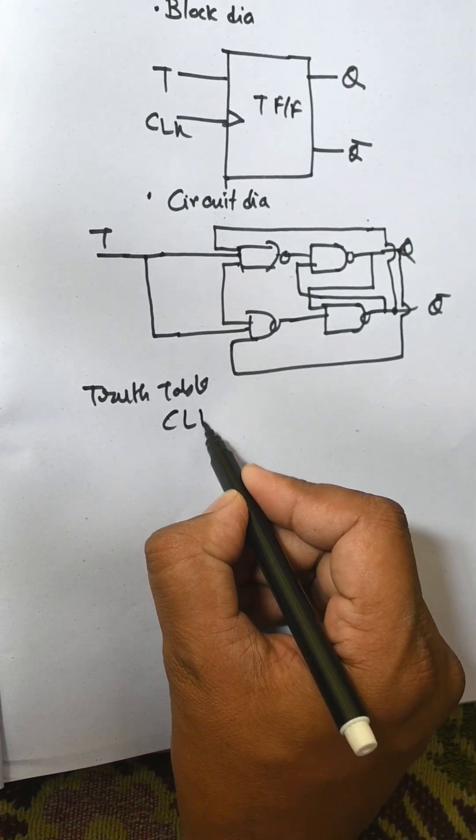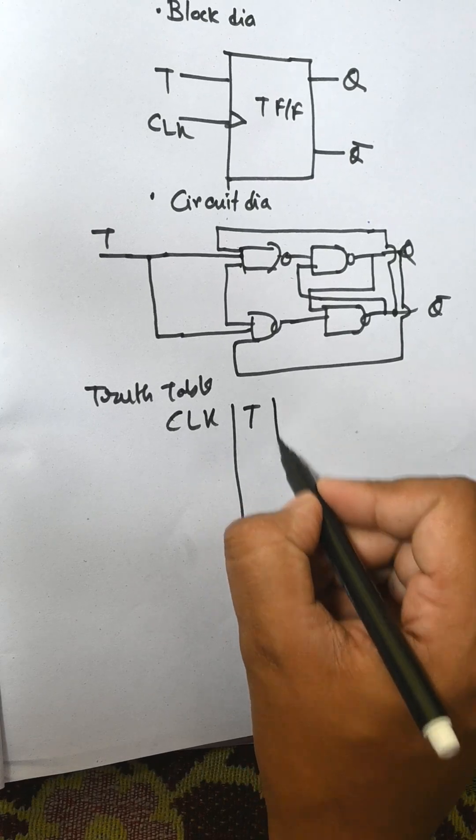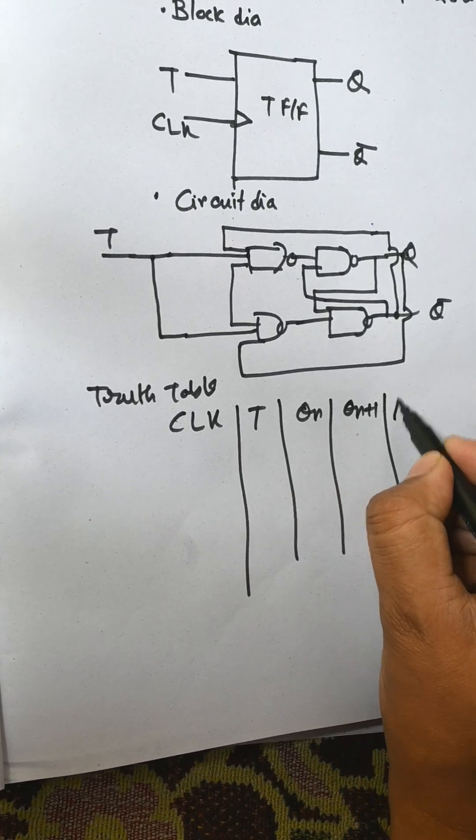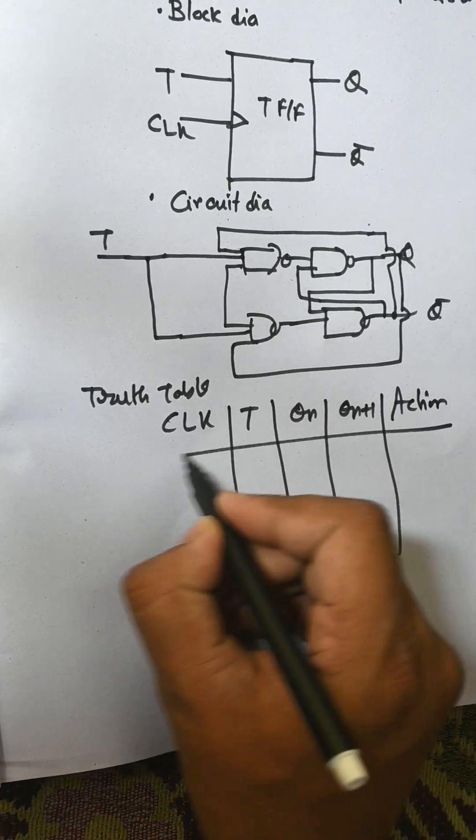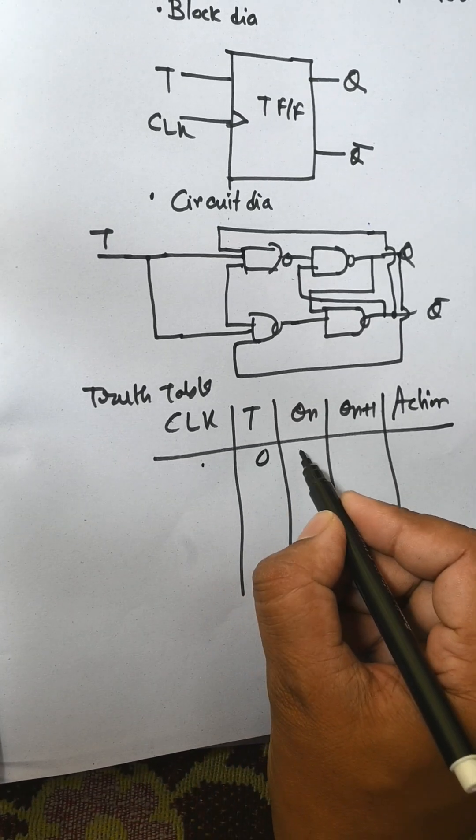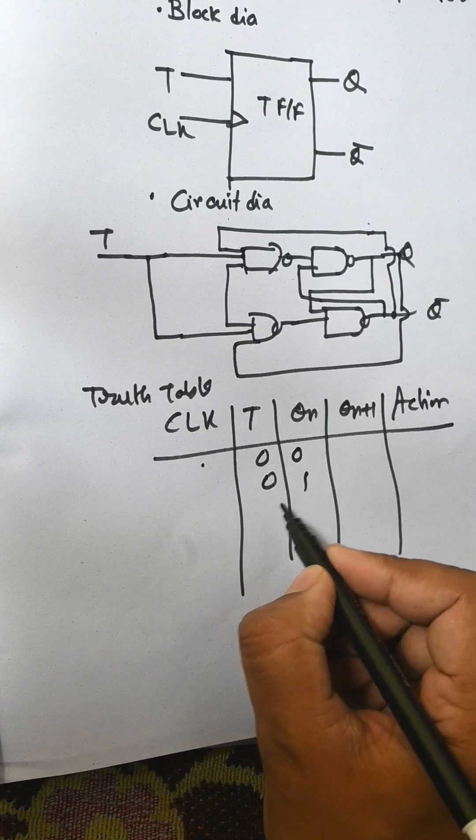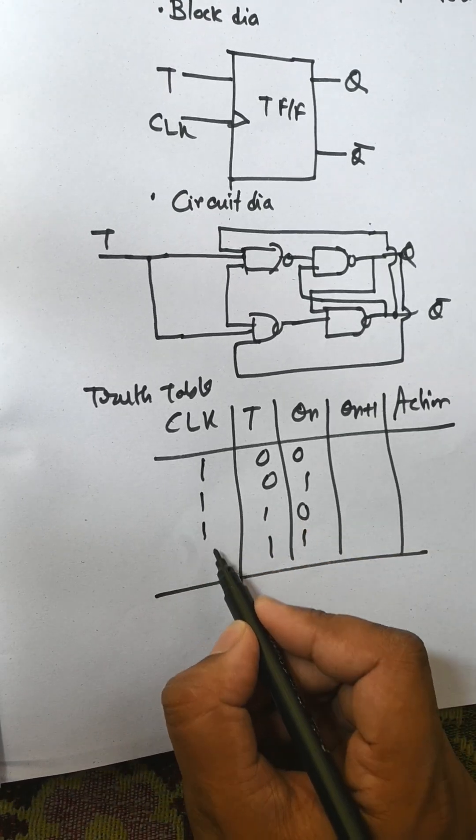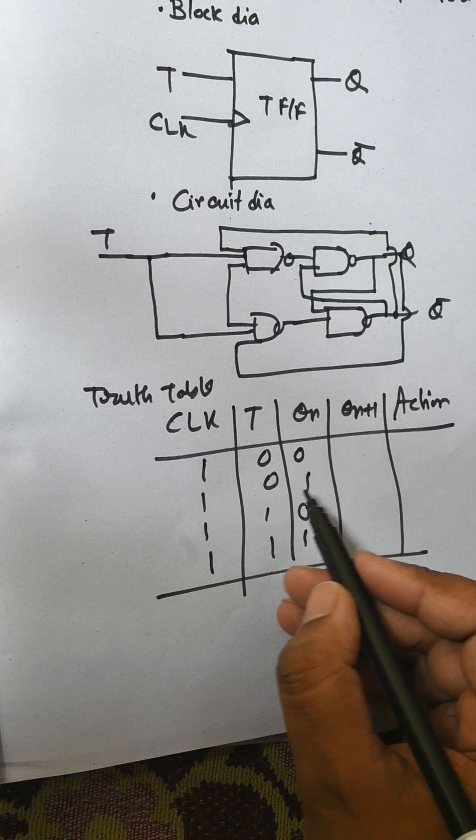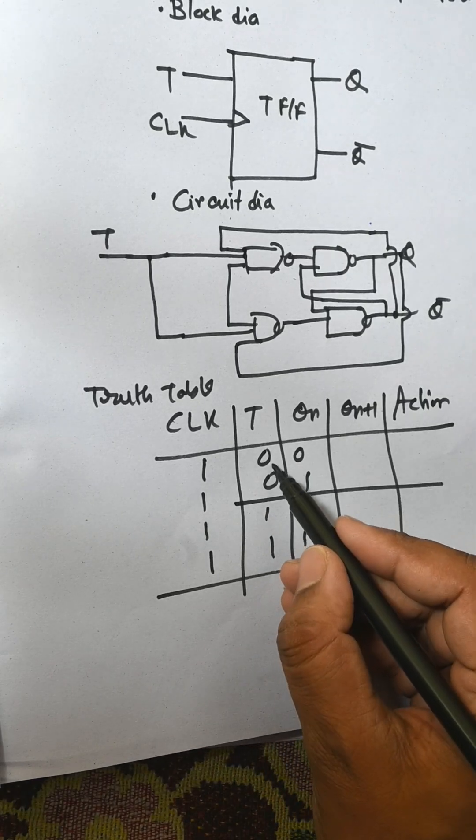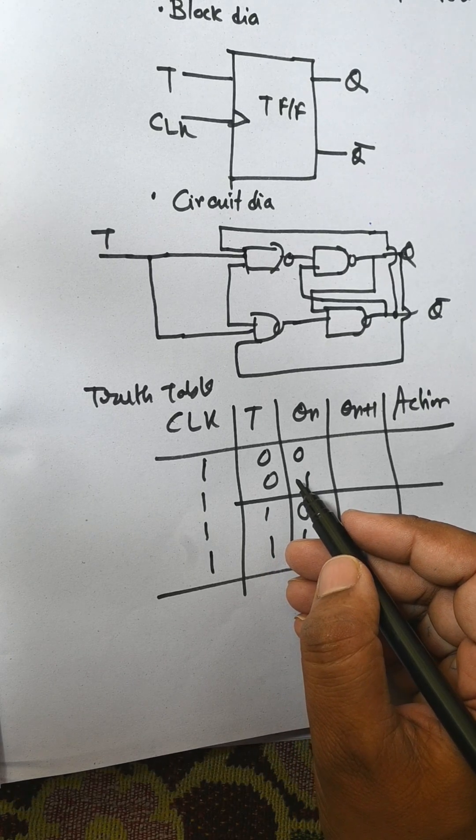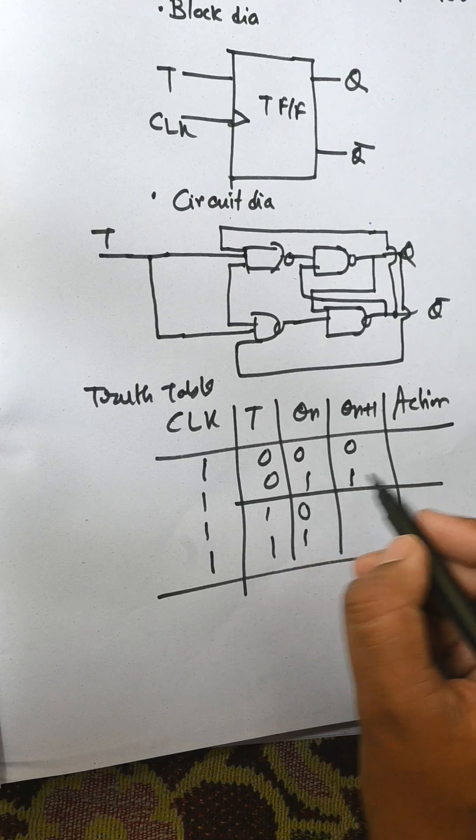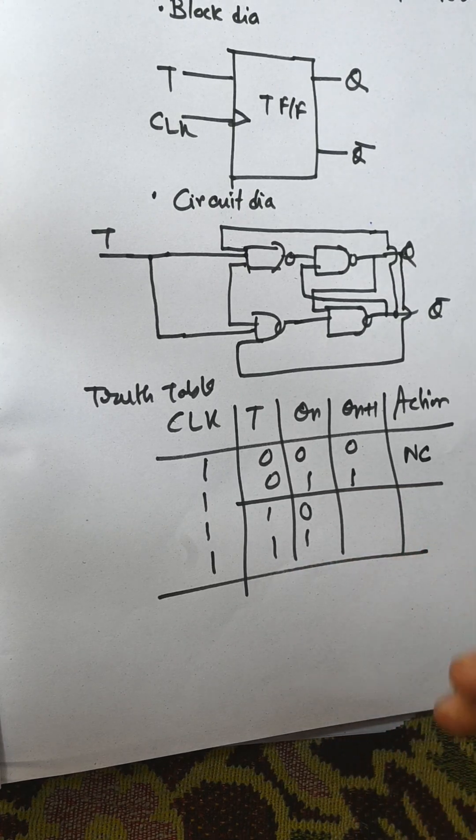Truth table consists of CLK, T, Qn, and Qn+1, and the action. CLK is 1, 0, 0, 0, 1, 1, 0, 1, 1. For each case CLK must be 1. When T is 0, the output is no change - that is, 0 remains 0, no change. And for